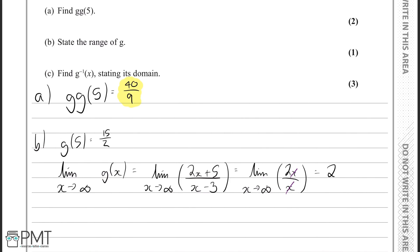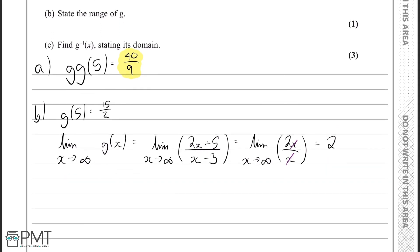So now we have two cases where, when x is the lowest possible value it can be, i.e. 5, g of 5, we have 15 over 2. And when x approaches infinity, the function approaches 2. So these must be our two bounds for g of x. So that g of x must lie in between 2 and 15 over 2.